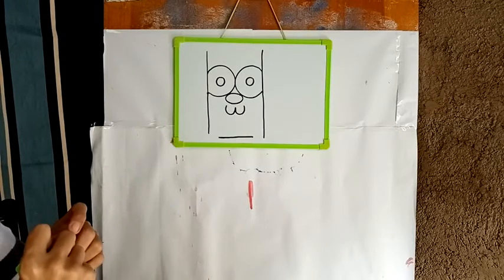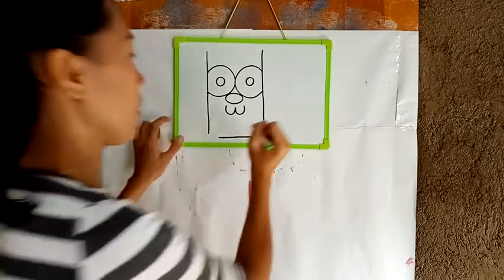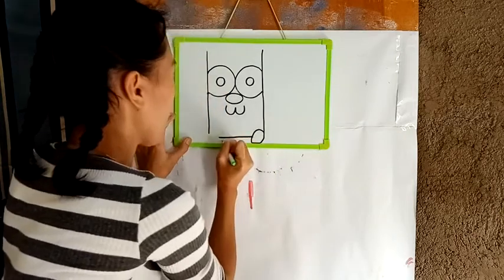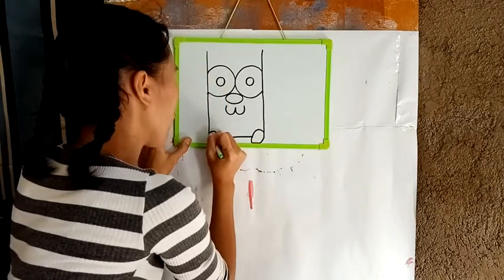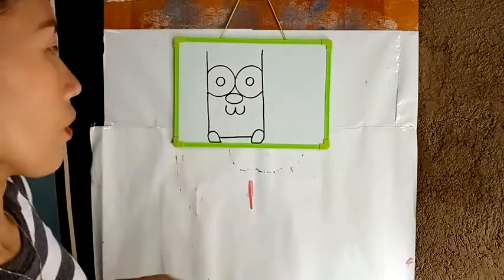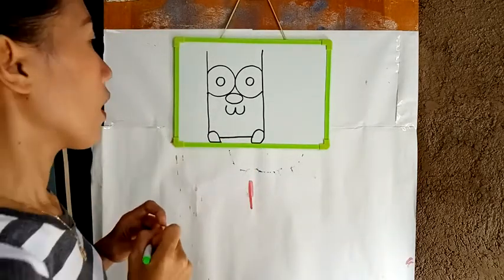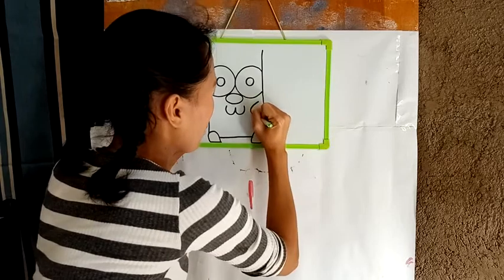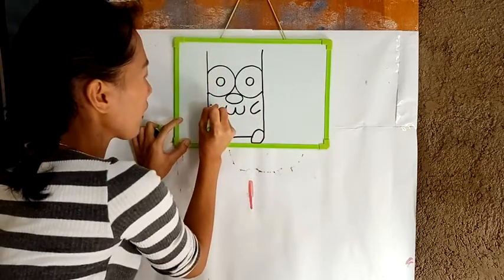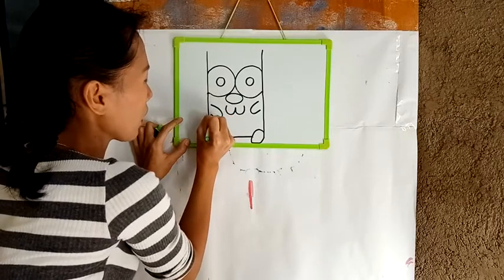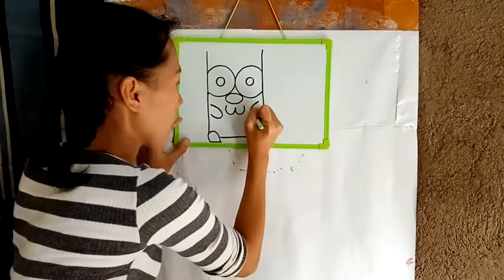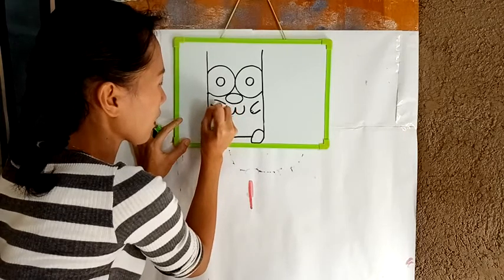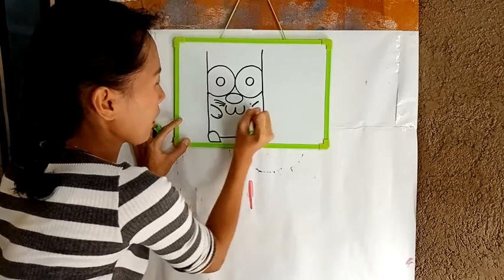Following along — and we are going to draw another oblong here. And it's okay if it's not perfect. Just imagine it's an oblong. And we are going to draw a somewhat like a semicircle here — letter U. Letter U and letter U. And small lines here, small lines here, and then small lines here, like that.